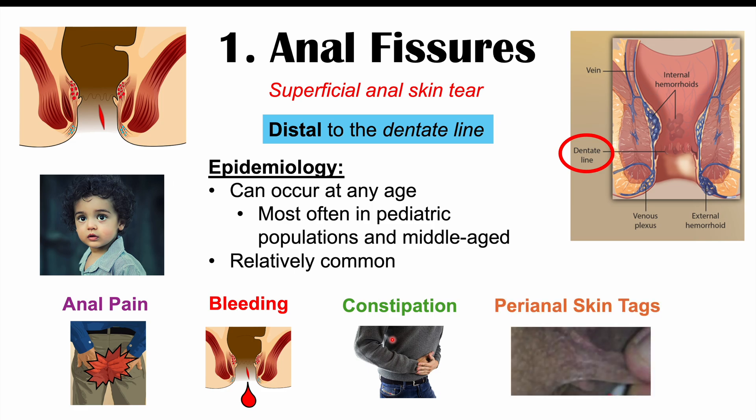Patients with anal fissures can also have perianal skin tags, but these occur with chronic anal fissures. If you've just started experiencing anal pain during defecation, that may be new onset and it's unlikely you'll have perianal skin tags yet. These skin tags in anal fissures develop if you've had the disease for a long period of time.